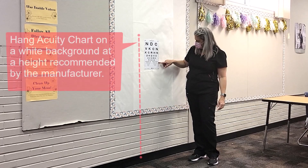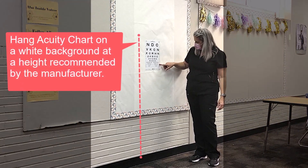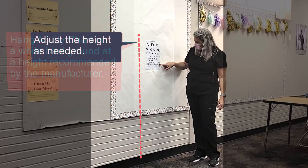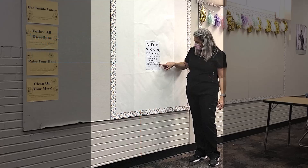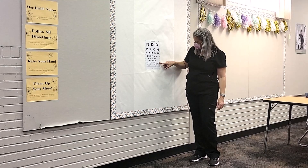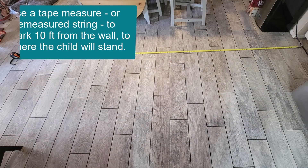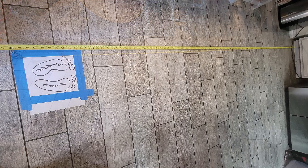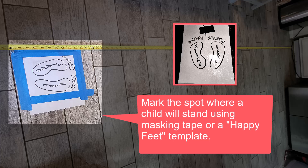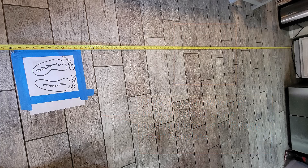Acuity charts should be secured to a blank white wall, with the height of the chart determined by the manufacturer. If a child in the group is significantly taller or shorter than the others, it may be necessary to adjust the height. Measure a spot 10 feet away from the wall, and mark the spot where the children will stand using masking tape or the Happy Feet template, which can be downloaded from the ADHS website. If using the Happy Feet template, ensure that the heels of the template are at the 10-foot mark.